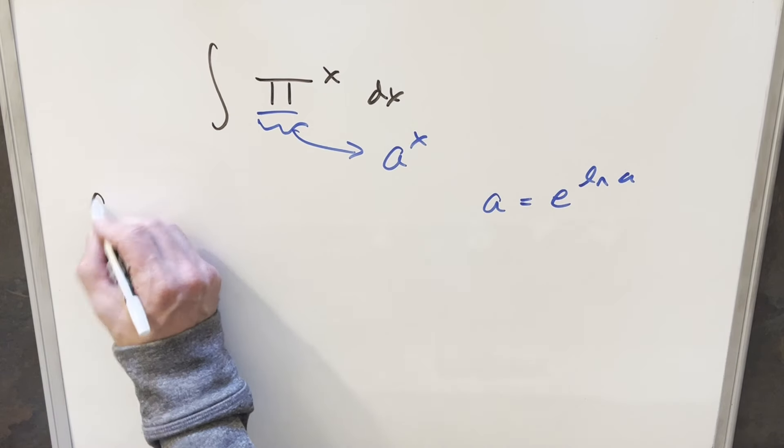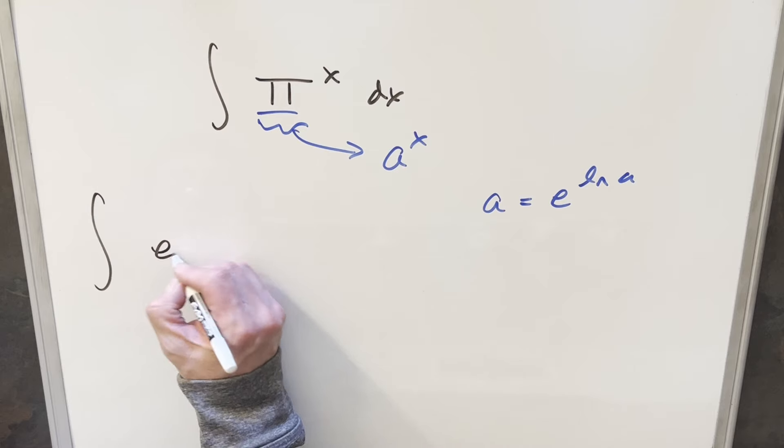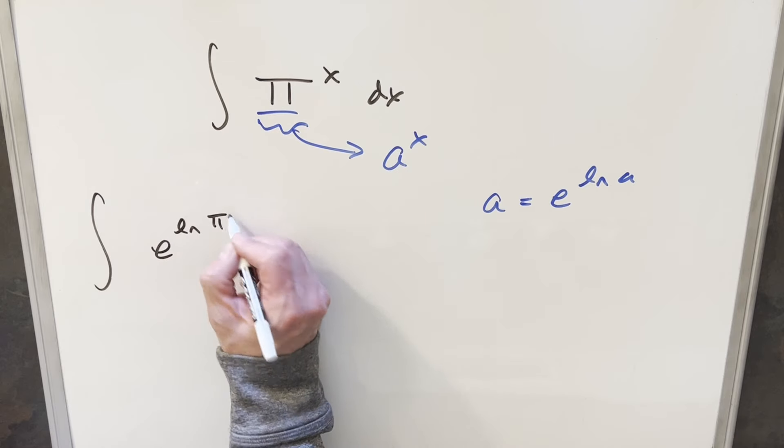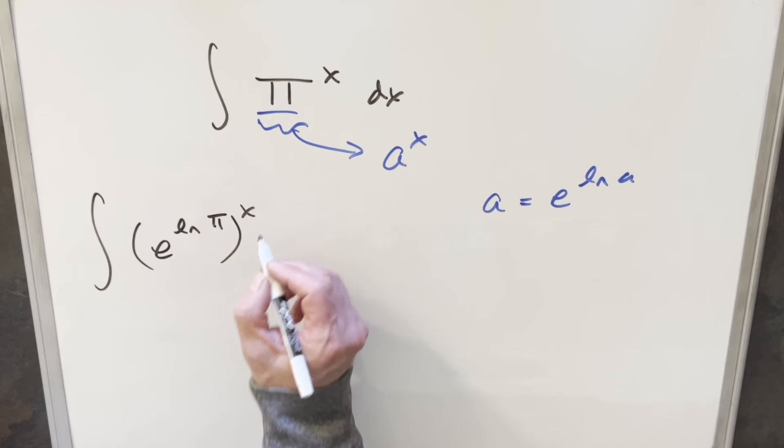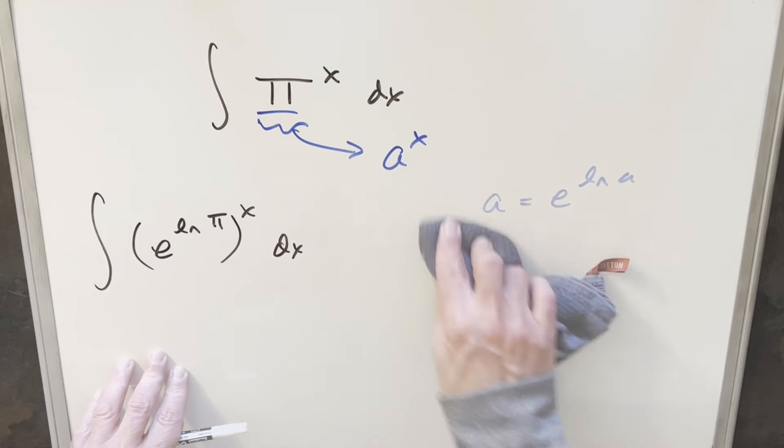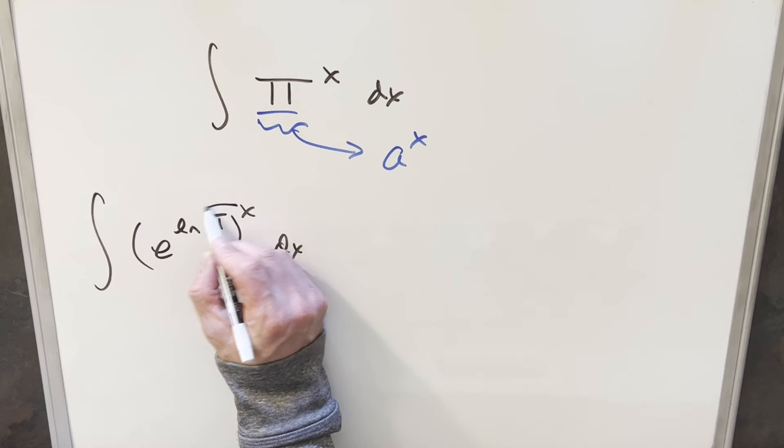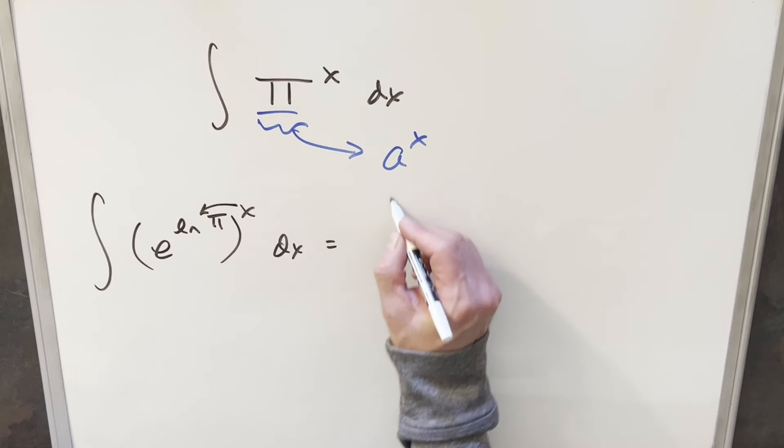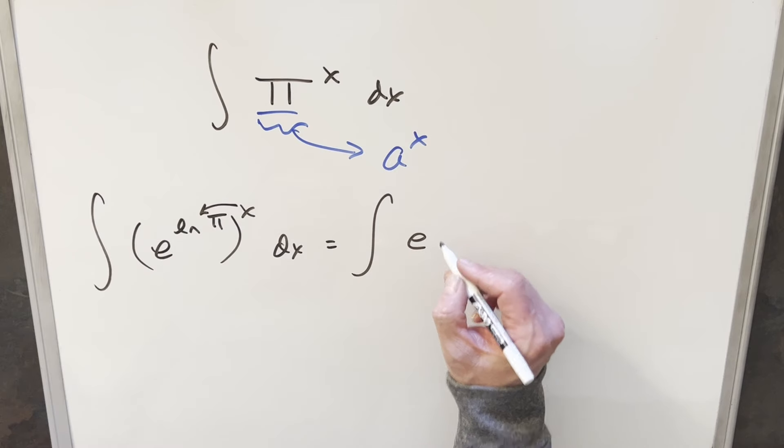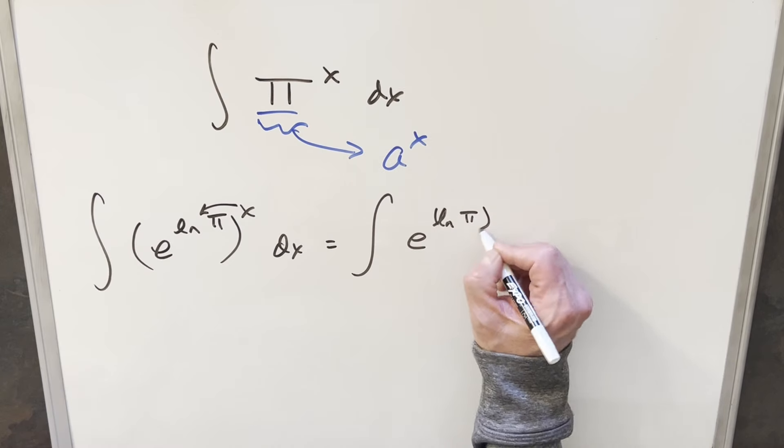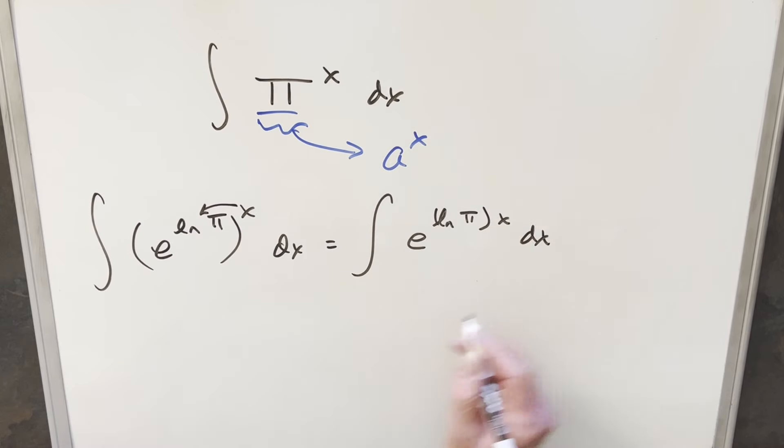So in the case of our integral, we'll just rewrite this, we'll rewrite pi. I'll rewrite it as e ln pi. But we just need to remember that's raised to the x power dx. But then what I can do is just with exponent properties, we can multiply this back in and just rewrite it as e ln pi times x dx.